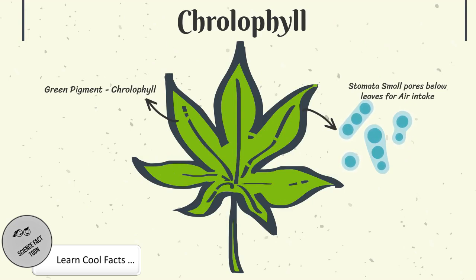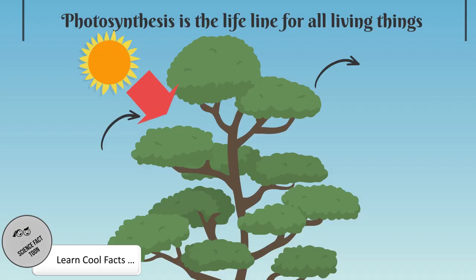In addition, leaves have small pores on their underside called stomata, which are used for air intake. Photosynthesis is important for life on Earth because during photosynthesis, carbon dioxide is taken as input and oxygen is released as a byproduct into the atmosphere.